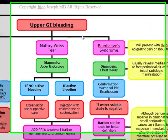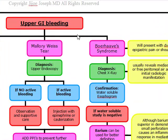Our next topic is upper GI bleeding, referring to bleeding that occurs in the section of the GI tract that extends from the upper esophagus to the duodenum at the ligament of Treitz.